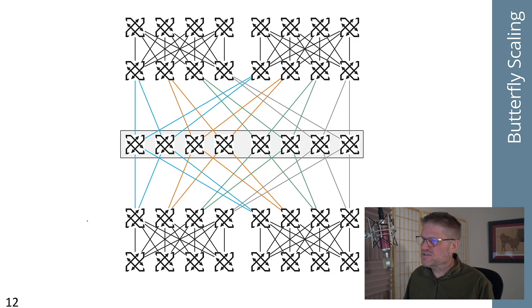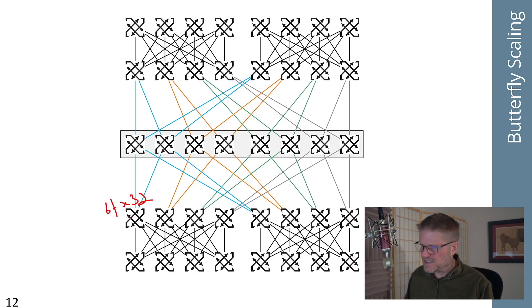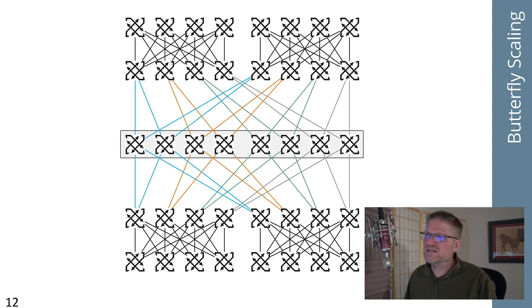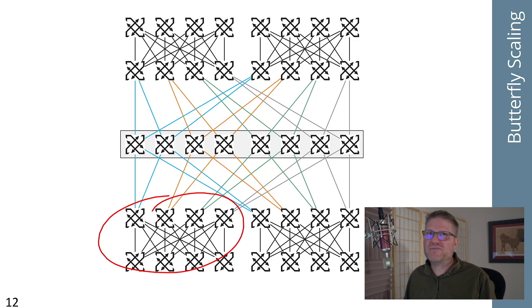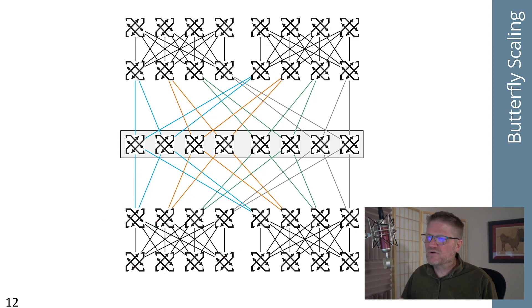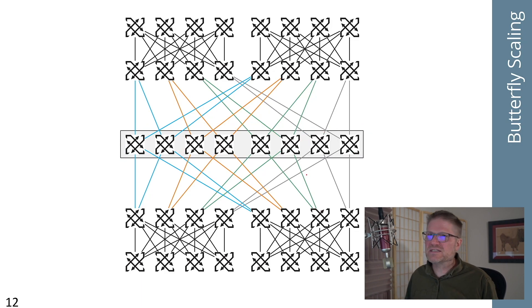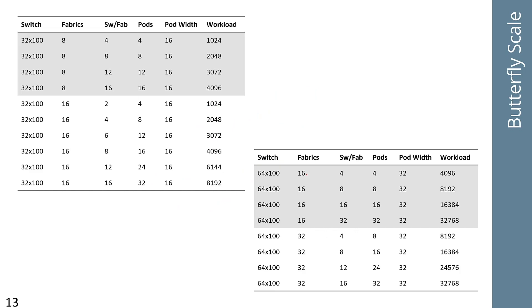Normally your pod in a butterfly is going to be exactly half the number of ports on these devices. So if these are 32-port devices you'll have a 16-wide pod, and if these are 64-port devices you'll have a 32-wide pod. You always build your pods to the same size. You can build smaller pods and use multiple connections, but it's easier math-wise to build pods to maximum size and then adjust the number of fabrics and devices per fabric to hit your target scale.